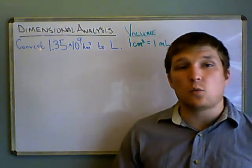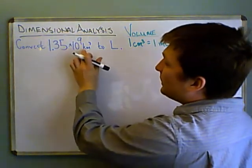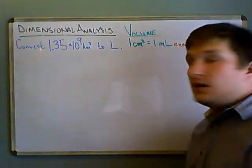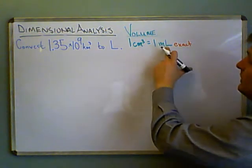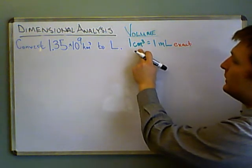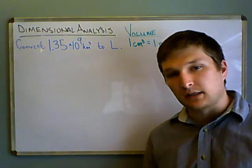We're going to convert 1.35 times 10 to the 9th cubic kilometers to liters, and we're given this. Now this is an exact measurement. One cubic centimeter is one milliliter, that's by definition, that's how we're defining one milliliter.